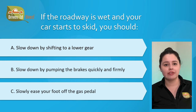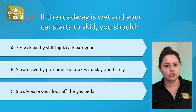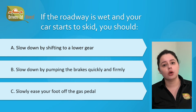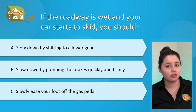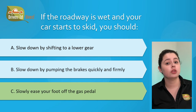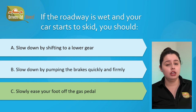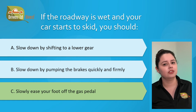Question number eleven: if the roadway is wet and your car starts to skid, you should: A) slow down by shifting to a lower gear, B) slow down by pumping the brakes quickly and firmly, or C) slowly ease your foot off the gas pedal. The correct answer is C, slowly ease your foot off the gas pedal. If you start to skid, ease off the accelerator, stop braking, and turn the steering wheel in the direction of the skid.